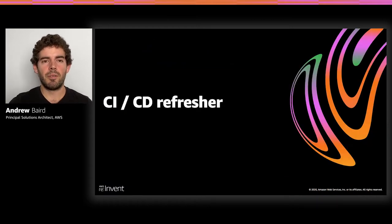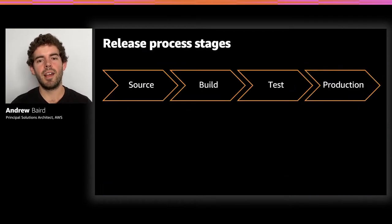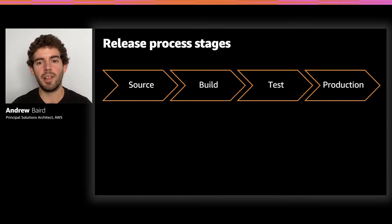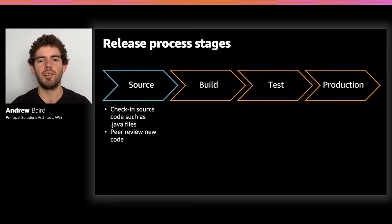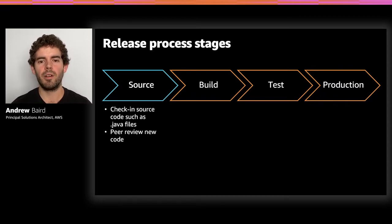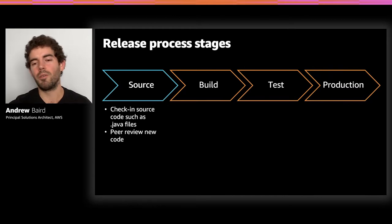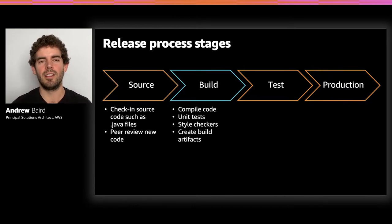We're going to refresh some general terminology about CI/CD. We've broken the software development lifecycle into four phases: source, build, test, and production. There are specific activities typically happening at each phase. In source, active development is happening and code gets checked into a repository — human processes generating the code, reviewing the code — but nothing's running yet. It's just the code-related mechanisms.